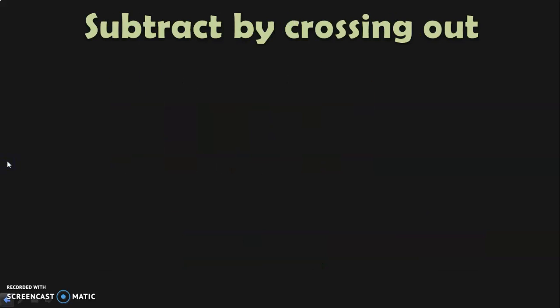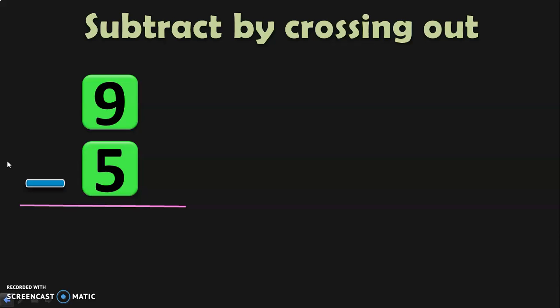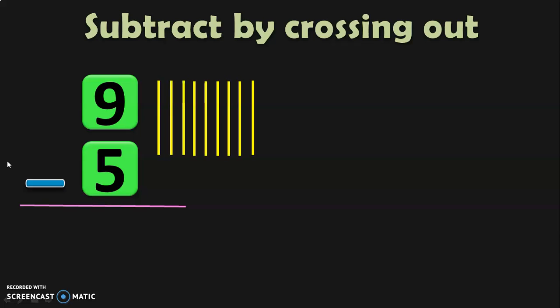The next concept is subtract by crossing out. Here, subtract 9 minus 5. We know that this is called vertical subtraction. Let us represent the number 9 in the form of 9 lines. Now we have to subtract 9 minus 5, so we are going to cross out 5 lines. When we cross out 5 lines, the remaining number of lines is 1, 2, 3, 4. So the answer for 9 minus 5 is equal to 4.